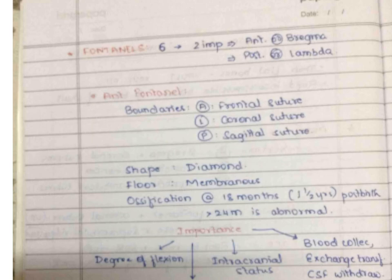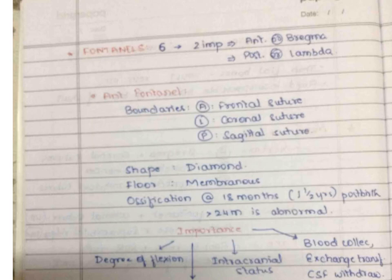A fontanel is a gap in the suture line. There are six fontanels in the body but two are very important for obstetrics: the anterior fontanel, also called the bregma, and the posterior fontanel, also called the lambda. For each fontanel we study five things: its boundaries, its shape, what covers its floor, when it gets ossified, and its importance.